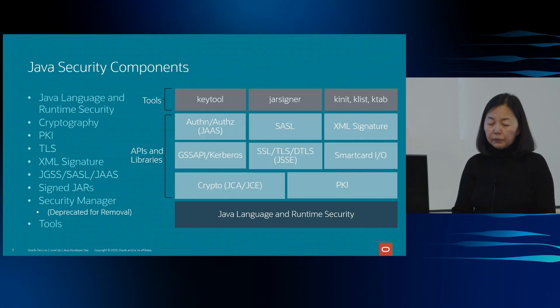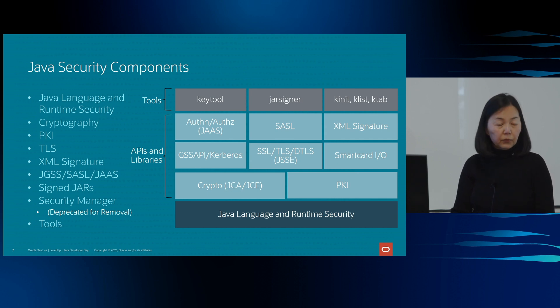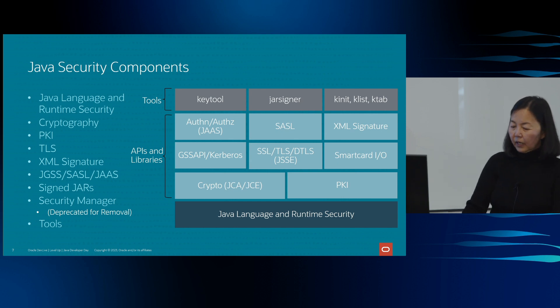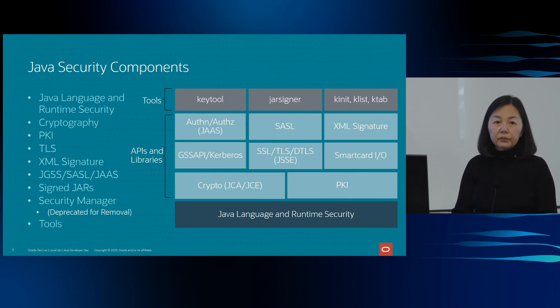The foundation of Java security is based on cryptography. The cryptography component contains APIs for various crypto primitives such as message digest, ciphers, signature, and key agreements. The JDK supports standard algorithms for each of these primitives — for example, SHA-2 for message digest and AES for ciphers.